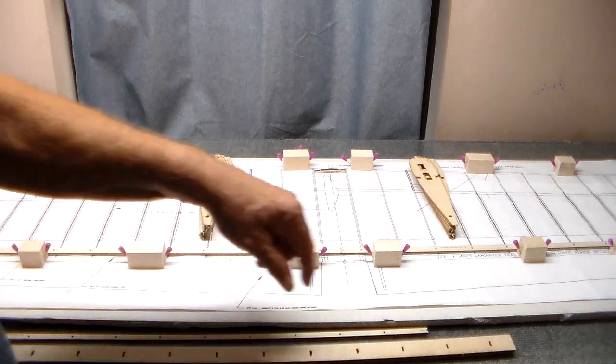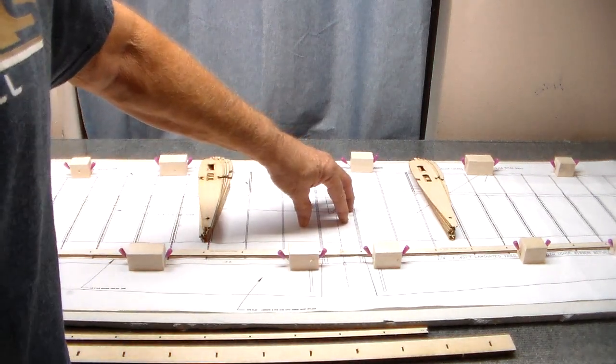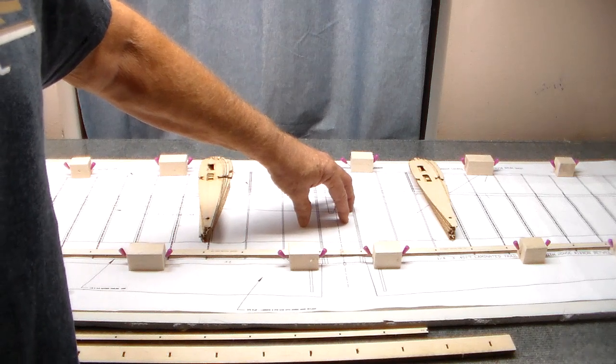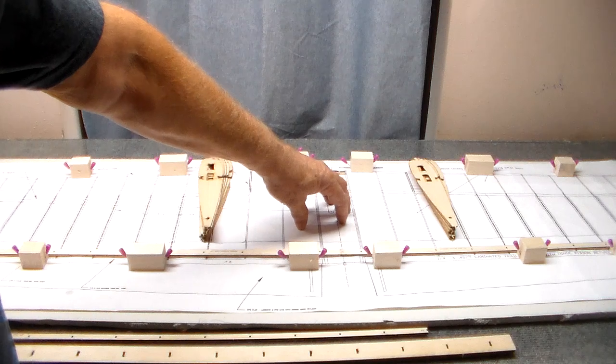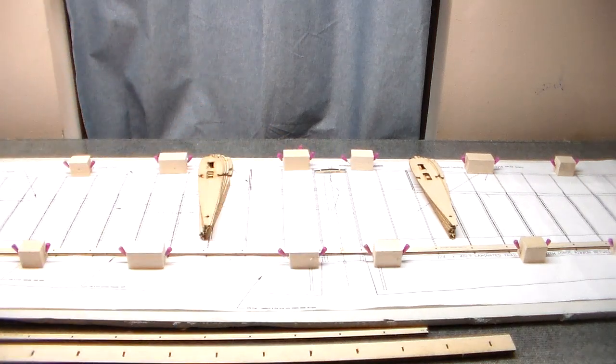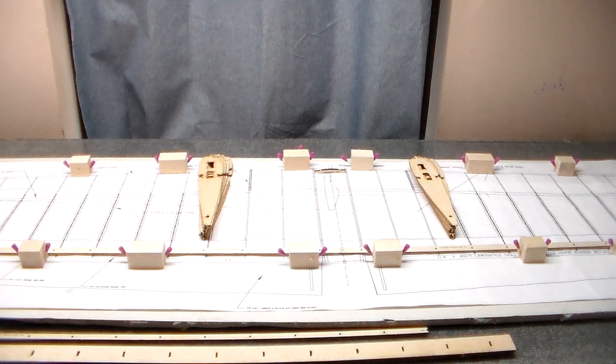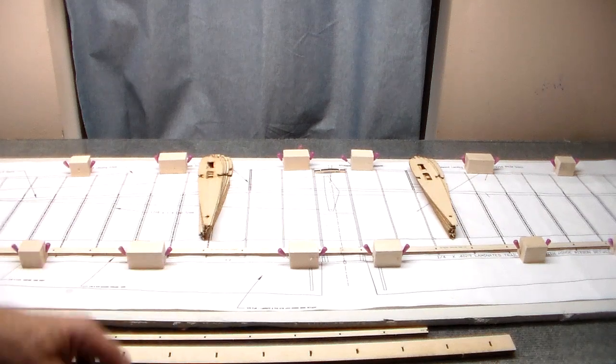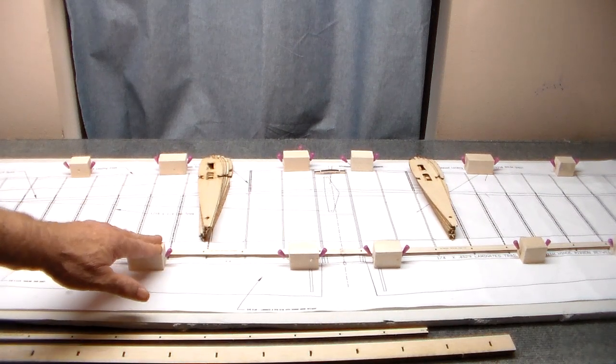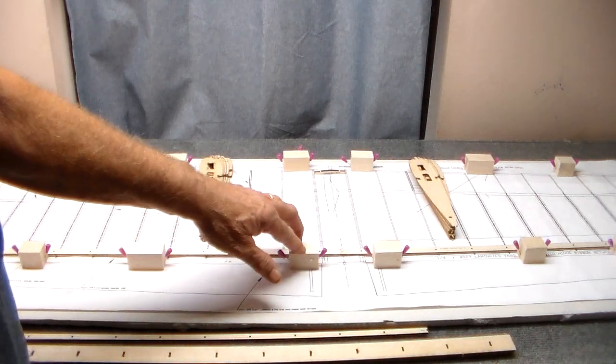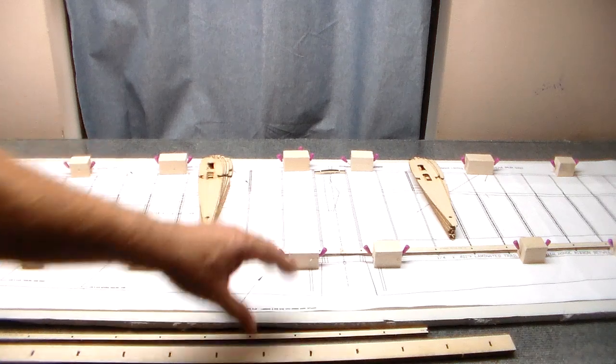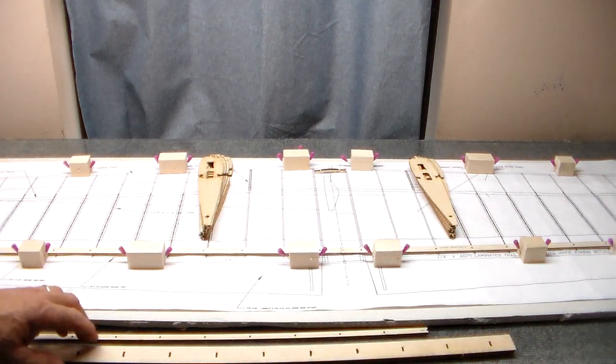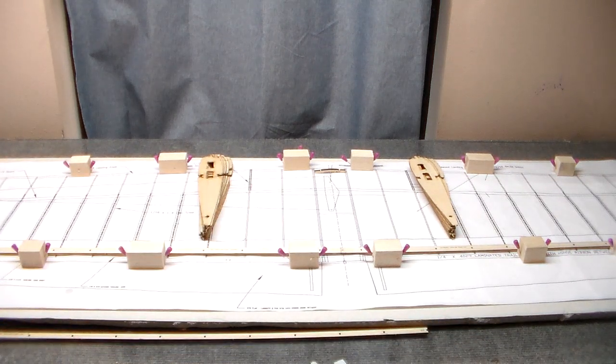The sheetrock has a little bow in it, so I just put a little weight right here to weight it down when I'm building the wing to make sure it's completely level. You need something to pin these blocks to. I have taken these blocks and cut them up and put them in between the ribs, spaced them out a little bit, and pinned them to the sheetrock at the leading and trailing edge locations.